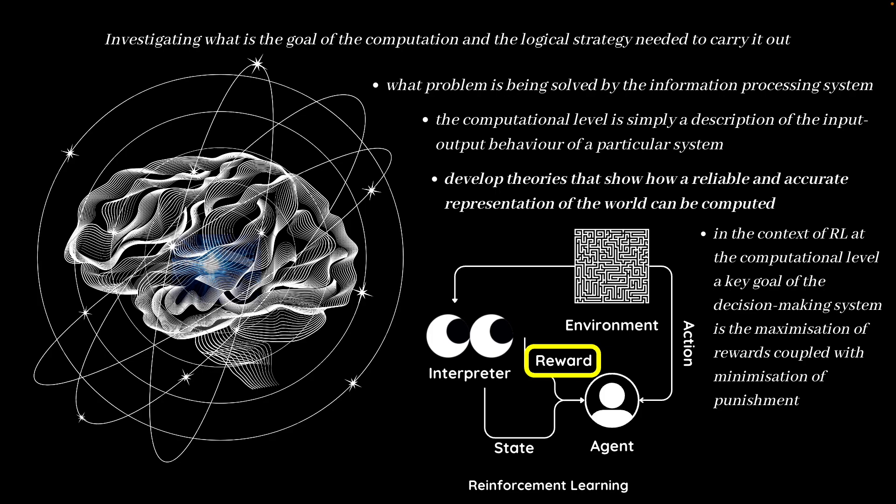For instance, in the context of reinforcement learning, at the computational level, a key goal of the decision-making system is the maximization of rewards coupled with the minimization of punishment. The logical strategy the decision-making system uses to achieve the maximization of rewards and the minimization of punishment depends on aspects like the type of rewards the decision-making system aims to pursue and the way they represent the environment state in which they are operating.